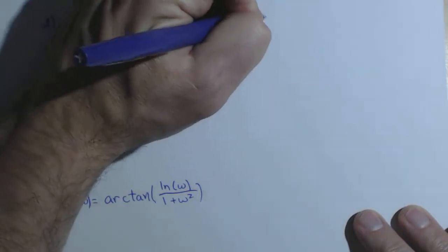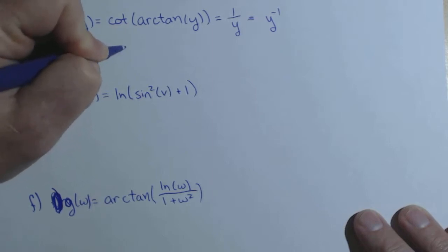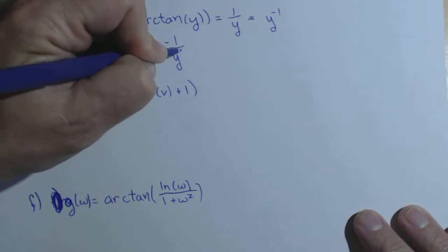So remember, this we would just rewrite as y to the negative one. So s prime of y is negative y to the negative two, or negative one over y squared.